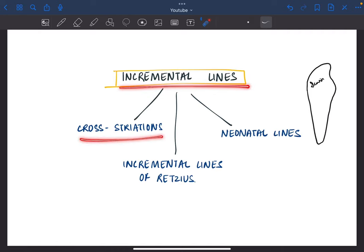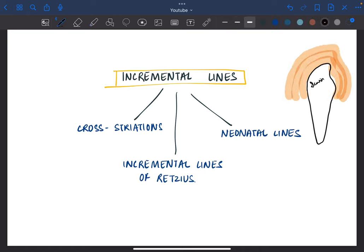Incremental lines of enamel include cross-striations, lines of Retzius, and neonatal lines. The basic concept to understand incremental lines is that the deposition of enamel takes place in increments, layer by layer, and due to this periodic deposition, these lines form.